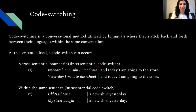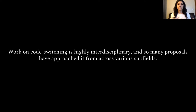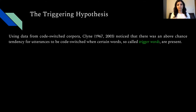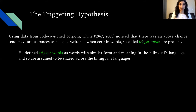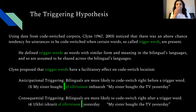Because code-switching phenomena position themselves at the interface of various subfields, work on code switching is highly interdisciplinary. The proposal I'm examining today was made by Klein, who noticed an above-chance tendency for code switch locations to occur near words that have the same form and meaning in the bilingual's two languages — so-called trigger words. These words are assumed not to belong exclusively to either language but to be shared across both. Klein proposed that trigger words have a facilitatory effect on code switch locations.